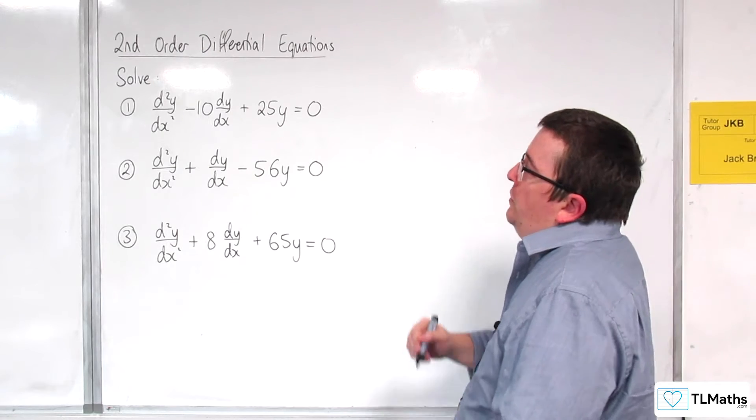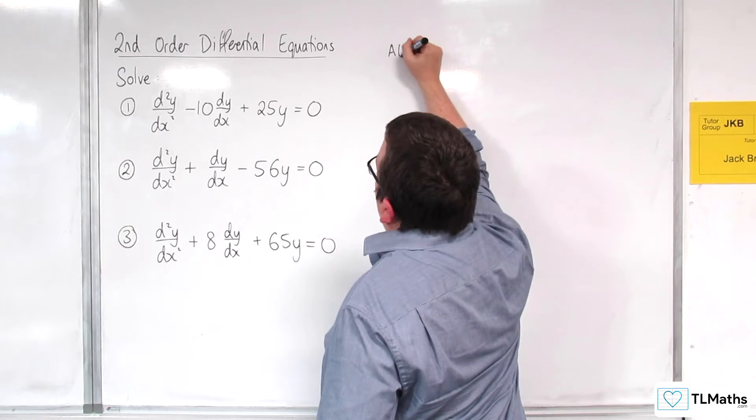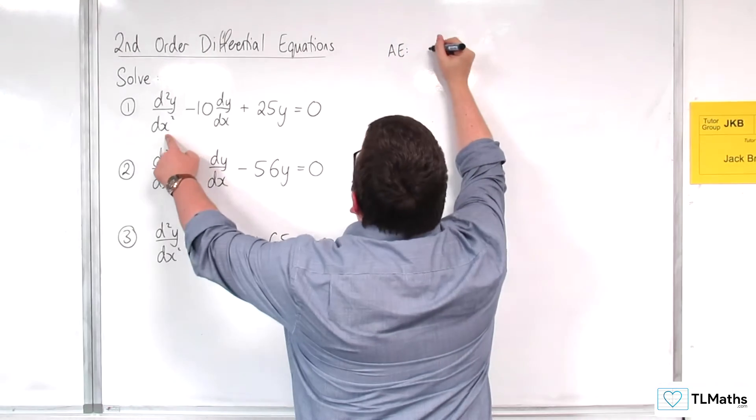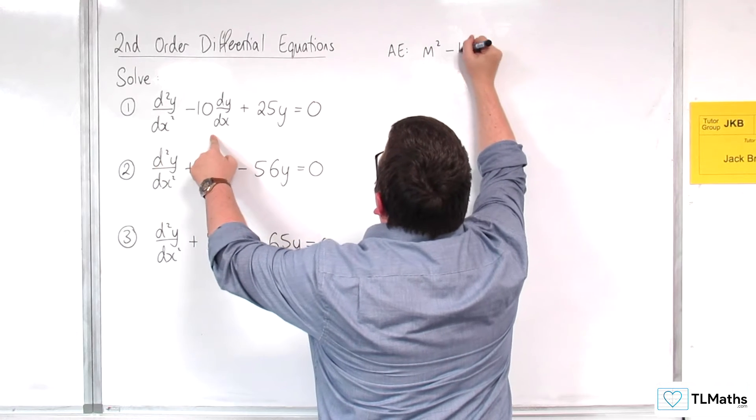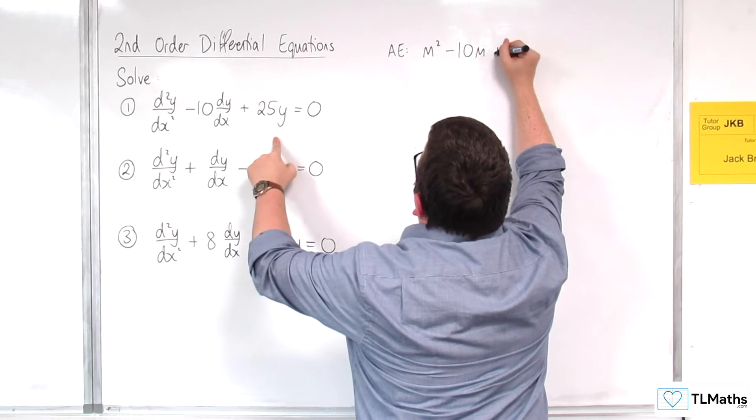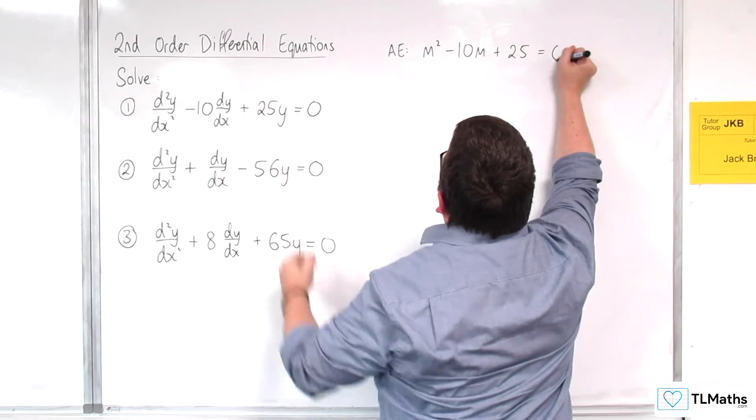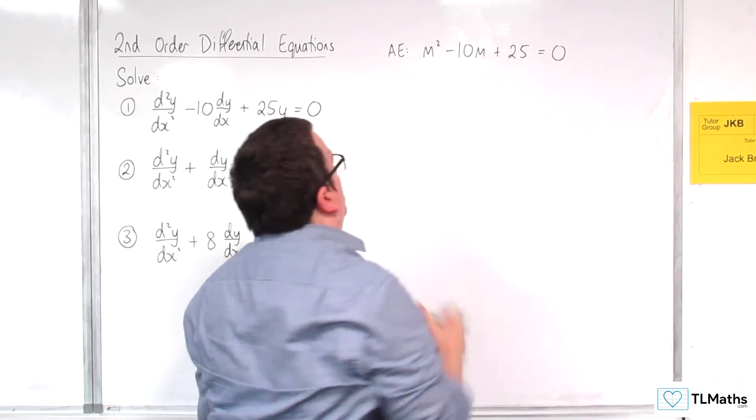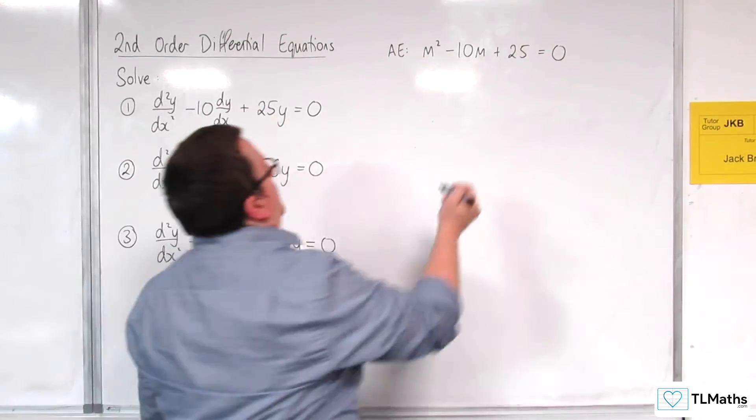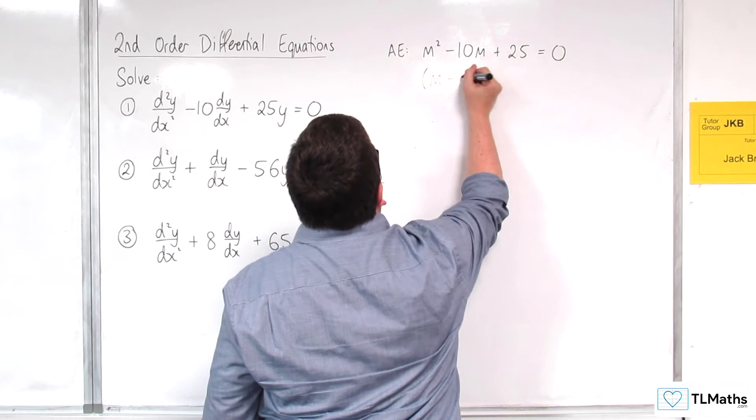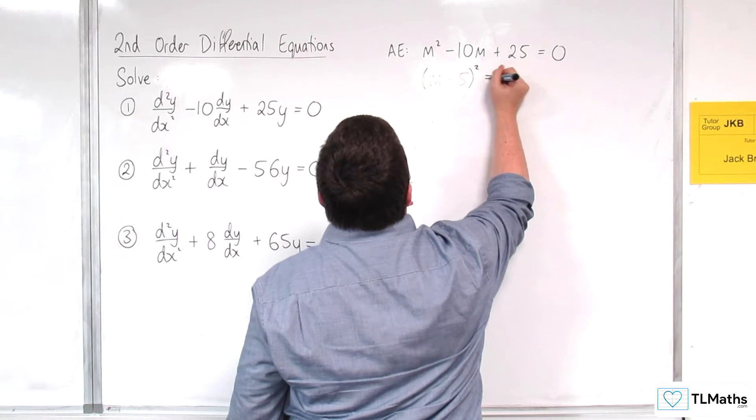We're going to go straight to the auxiliary equation. So that would be m² - 10m + 25 = 0. Now this is a quadratic that we can factorize because that is (m - 5)² = 0.